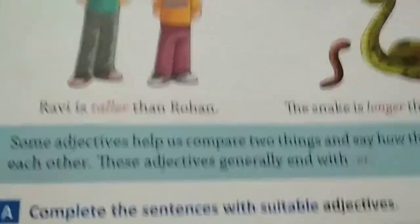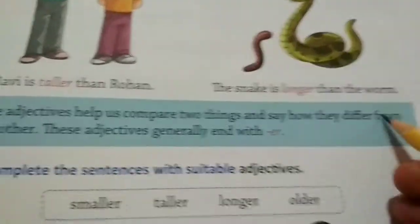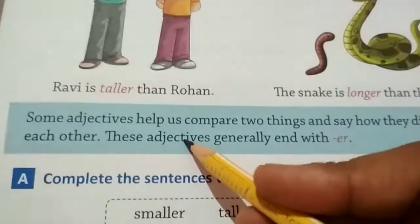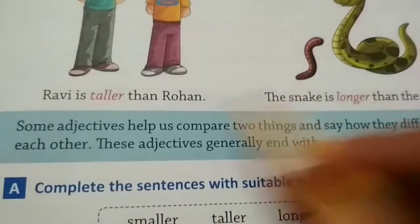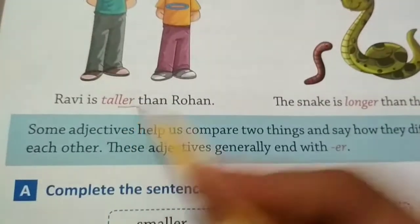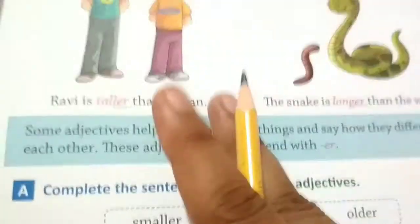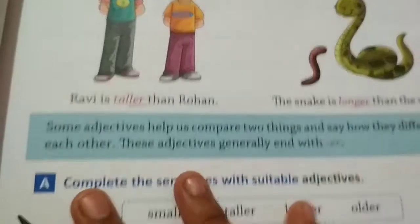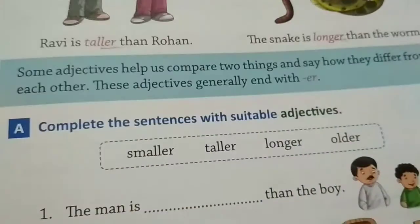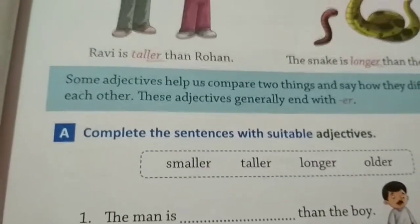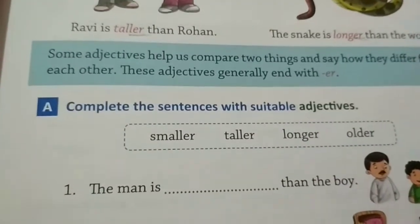Some adjectives help us compare two things and say how they are different from each other. These adjectives generally end with -er. If the adjective ends with -er, that is called comparison of two things. Comparison happens when there are two things.